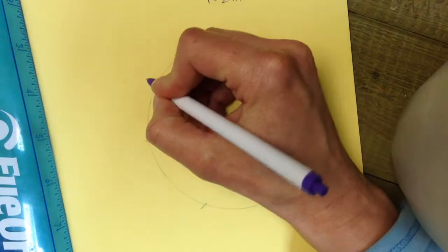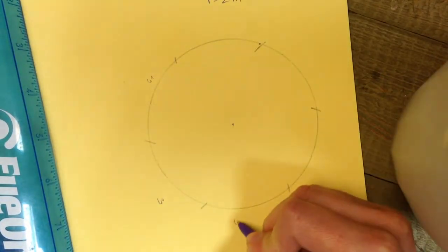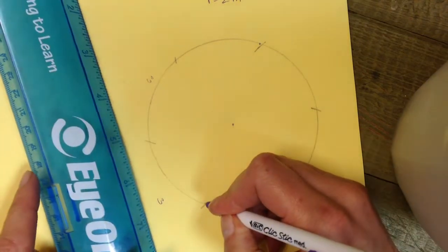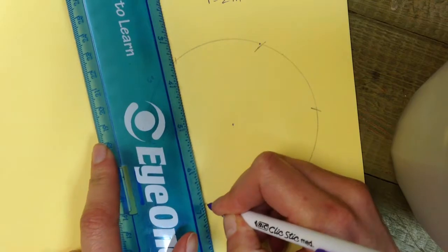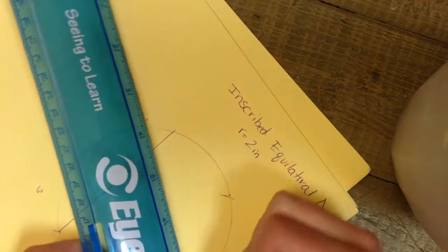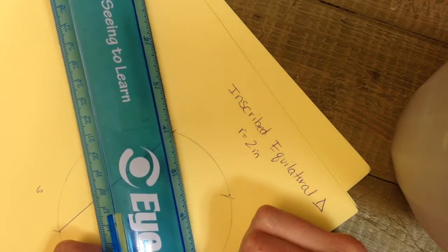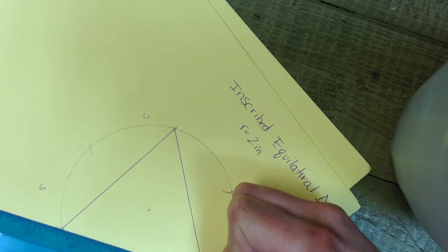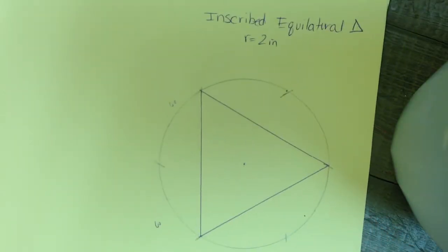Because if this was a hexagon, each arc would be 60 degrees, and for it to be a triangle, each arc would have to be 120 degrees. So I will just connect every other arc and that will create an equilateral inscribed triangle.